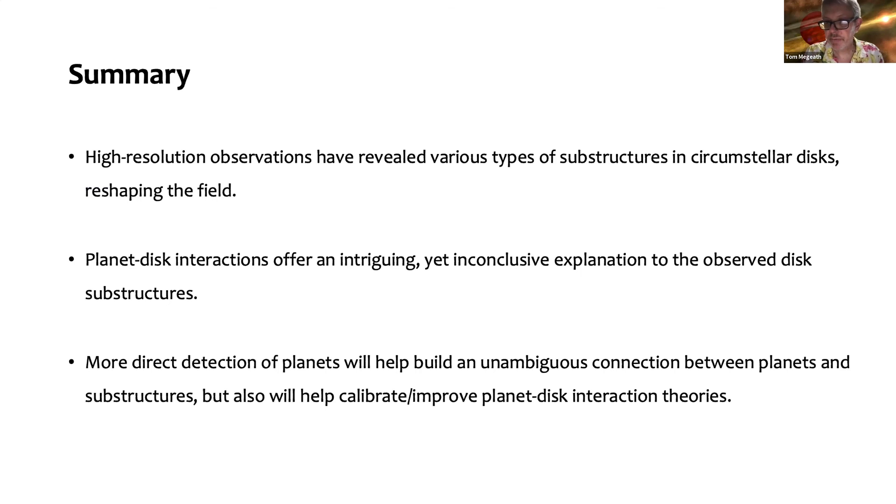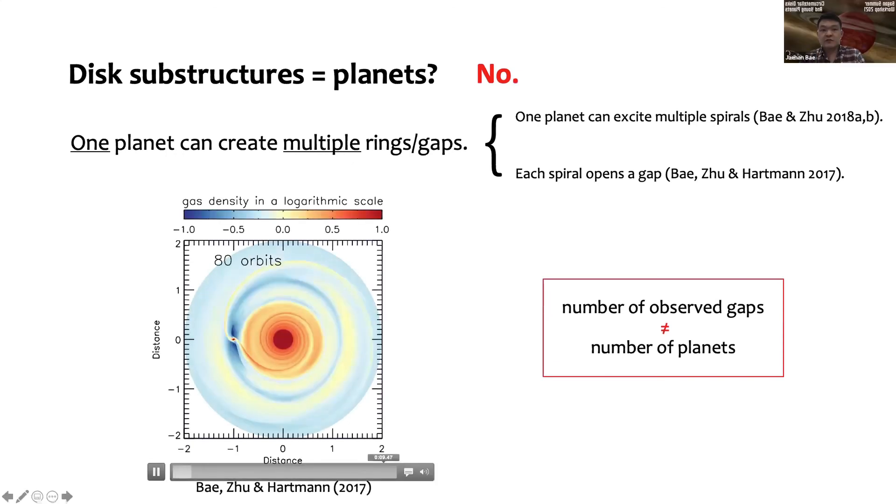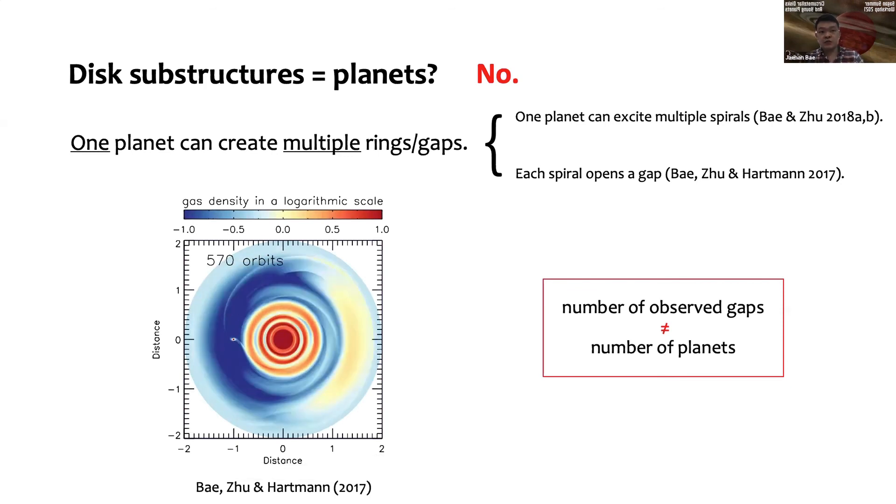All right, well thank you very much. It's a really interesting talk. Wow, there's a lot of questions. Please, if your question isn't asked, it will be answered in due time. But there were a lot of questions on how a single planet can actually form multiple gaps. Does a planet need to be further out in the disk to cause multiple gaps, or could you get gaps from a planet that was further into a disk? Could you explain what the conditions are for multiple gaps?